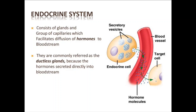These hormones are secreted directly into the bloodstream. In this diagram, we can easily see the endocrine gland containing secretory vesicles. When these vesicles burst, the small dark-blue granules are released into the blood vessels shown in red, and then they flow into your blood.